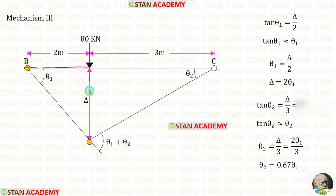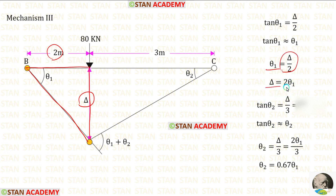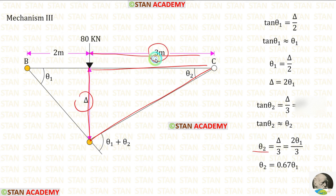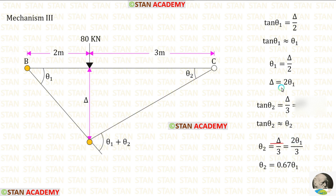In the left triangle, theta 1 equals delta upon 2, giving delta equal to 2 theta 1. In the right triangle, theta 2 equals delta upon 3. Substituting delta as 2 theta 1, we get theta 2 equal to 0.67 theta 1.